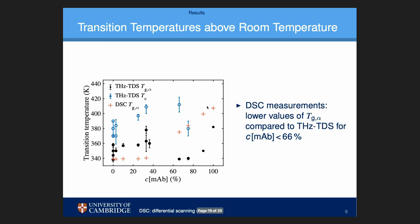One more set of data in this graph — the red crosses — is the DSC data on the same samples. Usually the Tg_alpha measured with DSC and the Tg_alpha measured with terahertz spectroscopy agree pretty well.